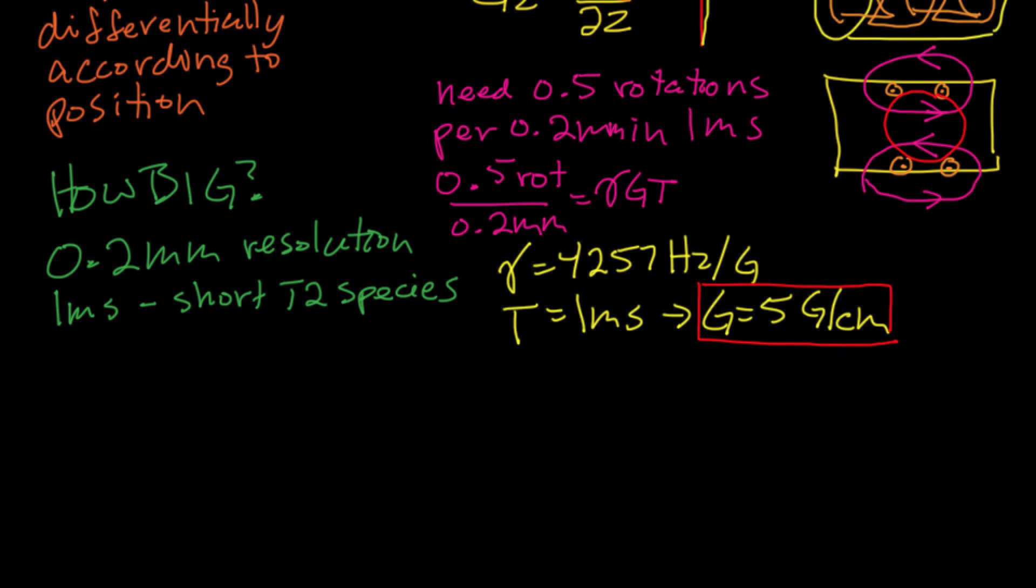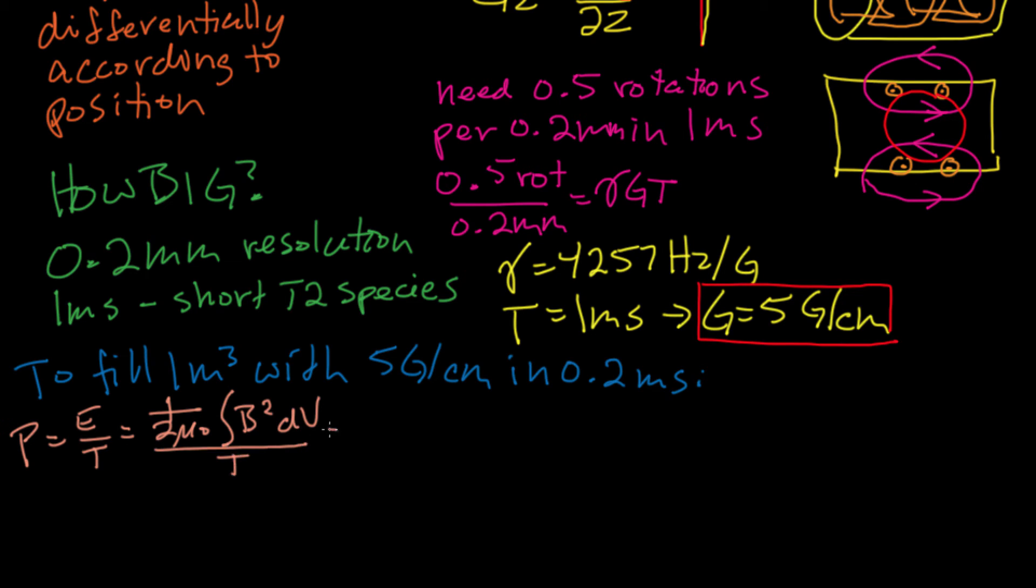Now taking a look at the power it takes to create such a gradient field. If we want to fill a cubic meter with 5 gauss per centimeter gradients, and we want to do that in about 0.2 milliseconds, so we want to ramp up in a time that's short compared to the pulse. The power required is the energy in the field over the time. The energy in the field is again the integral of B squared over the volume. Because it's a gradient field, we need to calculate the RMS value of a 5 gauss per centimeter gradient over that volume. But if you go through that arithmetic, you end up with a number that's about 500 kilowatts, so about a half a megawatt of power to get your gradients going in 200 milliseconds. And this power requirement sets one of the limitations for how fast your gradient system can go.